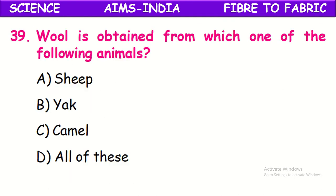Wool is obtained from which of the following animals? Sheep, yak, and camel all give wool hair which is used for making woolen fiber.